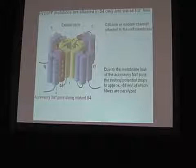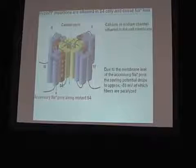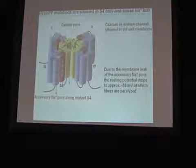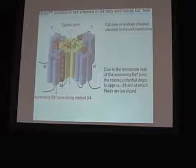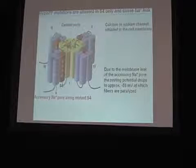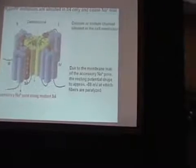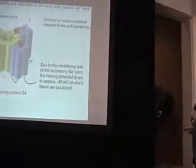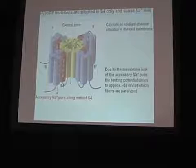Segments 1 through 4 are the so-called voltage sensing domain. This depends on the fact that the S4 segment carries many positive charges. You can see here one of the positive charges, and here you can see the full S4 segment — there are several positive charges. The S5 and S6 segments form the lining of the pore. All mutations that cause hypokalemic periodic paralysis are situated in the S4 segments — in one of the four S4 segments.